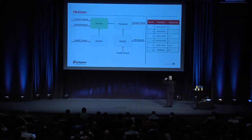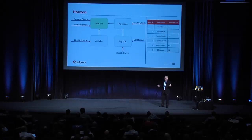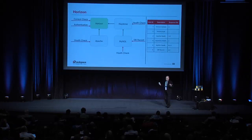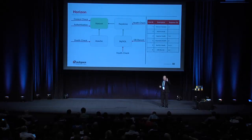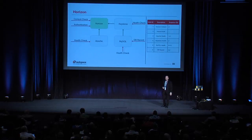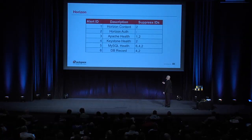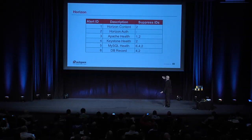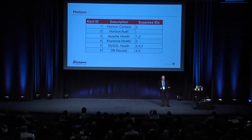If the MySQL health check fails, the DB health check will also fail because you can't run a SELECT against a database server that's not operating. The takeaway is that monitoring Horizon is more complex than it initially seems — if you want a robust solution, you don't just monitor the thing you're trying to monitor, you monitor all dependencies down the chain so that when something breaks, you get a single alert telling you what you need to start troubleshooting. We've created six alerts with suppression rules that make them meaningful.